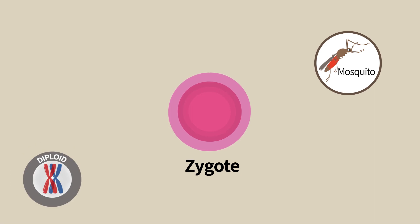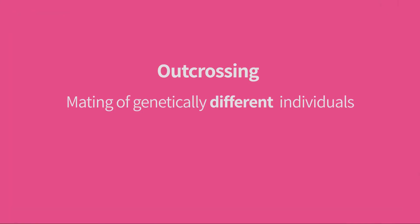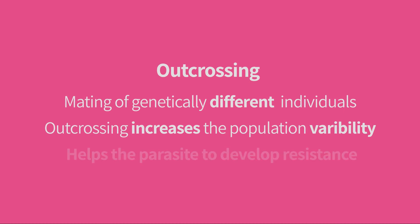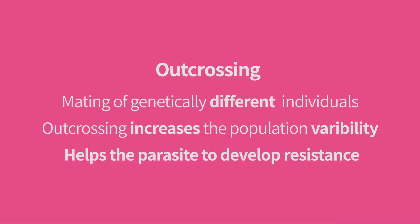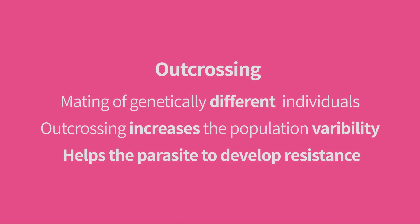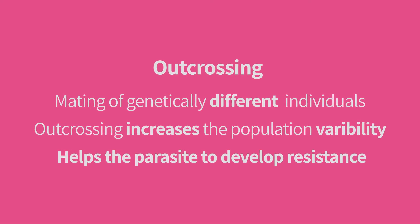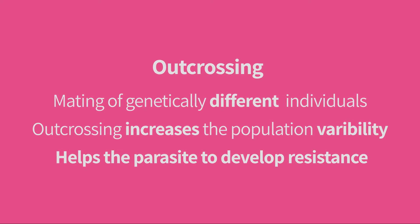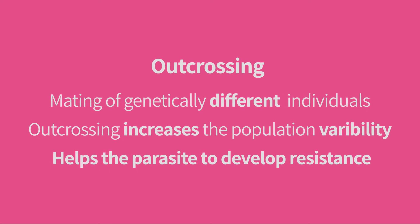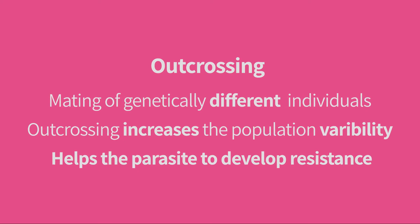As a mosquito often bites more than one person, parasites from different people can mate in its digestive system. This outcrossing increases the genetic variability of the parasite and may help it develop resistance to the immune system and to drugs. Indeed, one of the major problems of developing anti-malaria drugs is the speed by which parasites become resistant to new drugs.